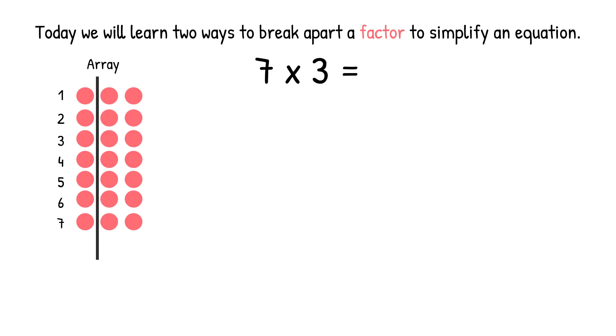Now we have two smaller arrays. Look at the array on the left side. What is our new equation? We have seven rows of one in each row. So our new equation for that array is 7 times 1. The array on the right side of the line shows seven rows with two in each row. So our new equation for that small array is 7 times 2.